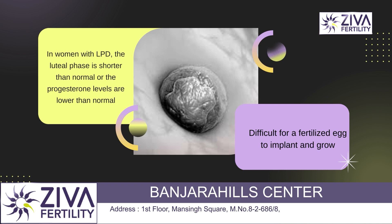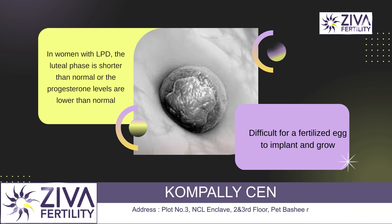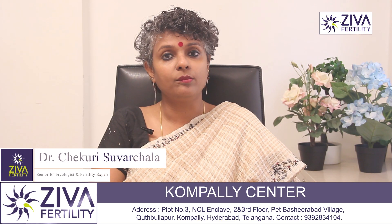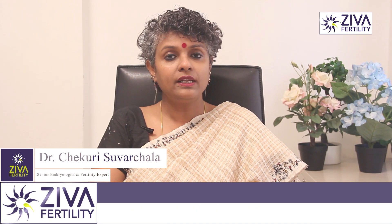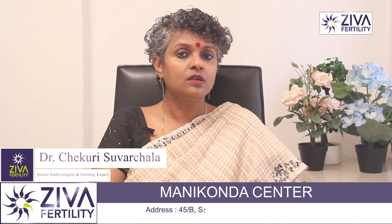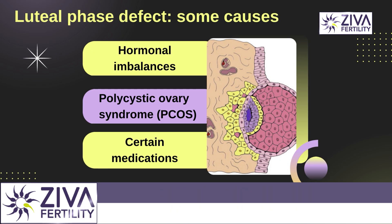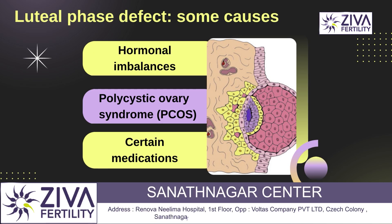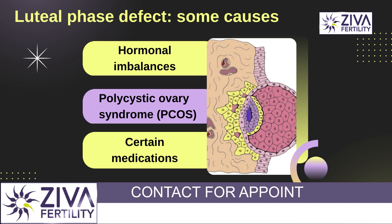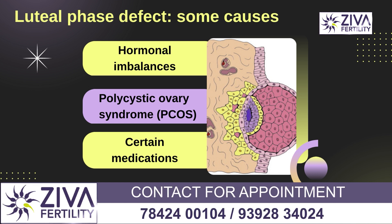In women with luteal phase defect, the luteal phase is shorter than normal or the progesterone levels are lower than normal, which can make it very difficult for a fertilized egg to implant and grow. Causes of luteal phase defect can include hormonal imbalances, polycystic ovarian syndrome, and certain medications.